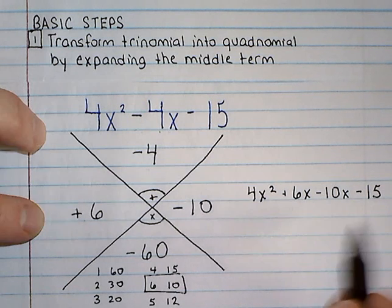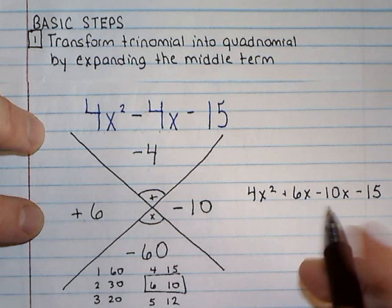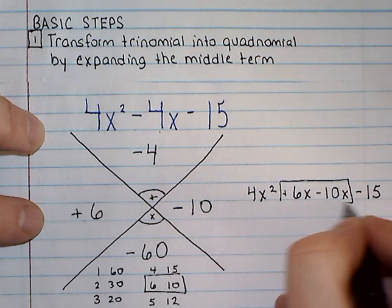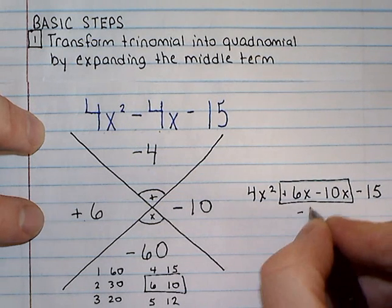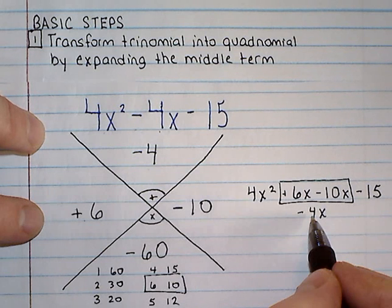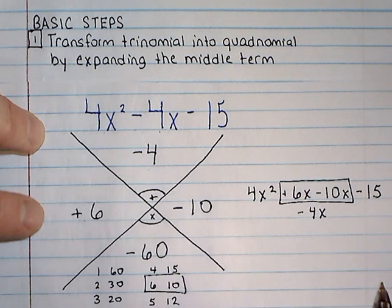And what you can see is this problem and this problem are identical, except that my middle term, which had been a negative 4x, has now been transformed into a positive 6x minus 10x.